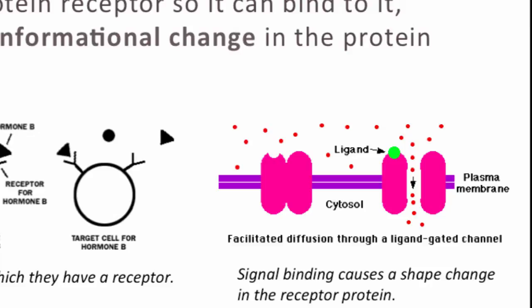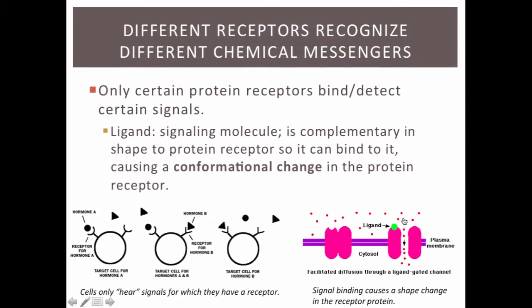The kind of conformational change you get depends on the type of protein receptor. This particular receptor is known as a ligand-gated ion channel. When the ligand binds to the receptor, that triggers a shape change which enables ions to enter or leave a cell.